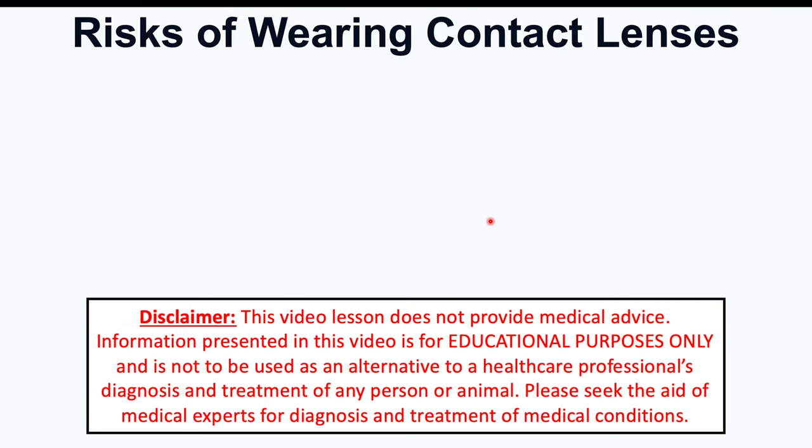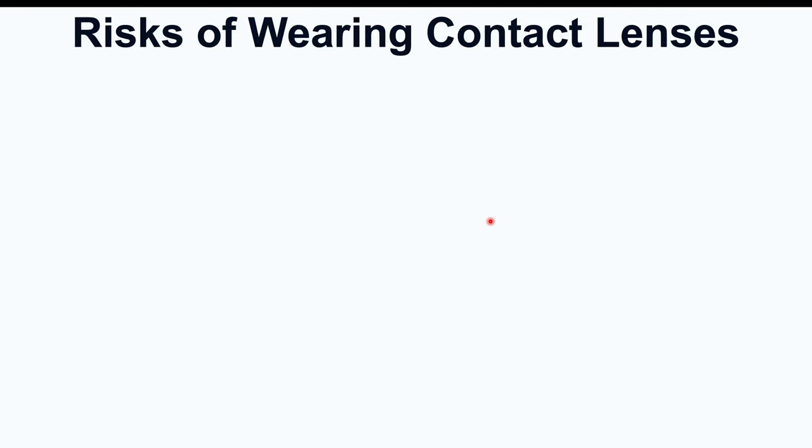Hi everyone, this lesson is on the risks and complications of wearing contact lenses. We're going to talk about seven different eye conditions that can occur in contact lens users. Before we talk about those seven different conditions, let's talk about what contact lenses are and the different types of contact lenses.